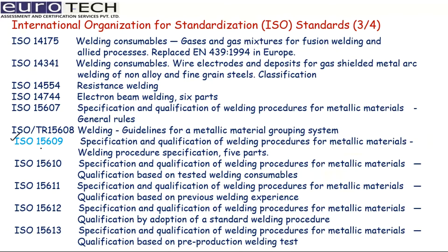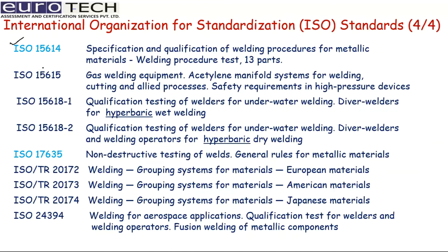Coming to ISO 15609, it is about the specification and qualification of welding procedures for metallic materials — the Welding Procedure Specification. This is primarily for making a WPS. And this WPS is prepared on the basis of standard ISO 15614, which covers the specification and qualification of welding procedures for metallic materials — essentially a procedure test. So based on the WPQR, you make the WPS. Another standard, ISO 17635, is about non-destructive testing; all NDT procedures are given in this standard.